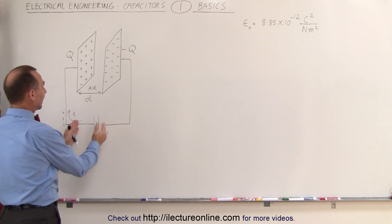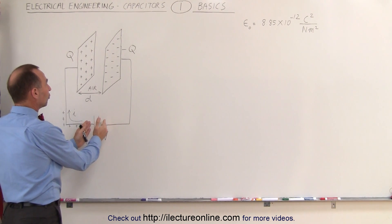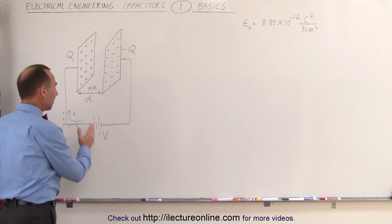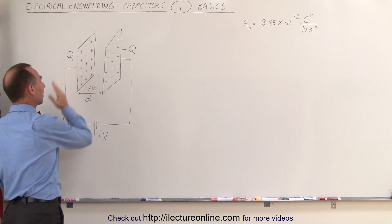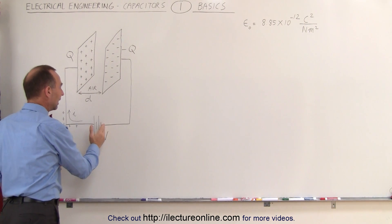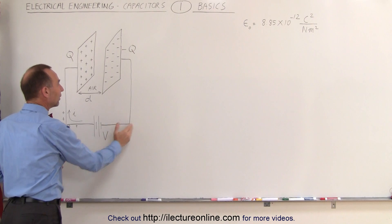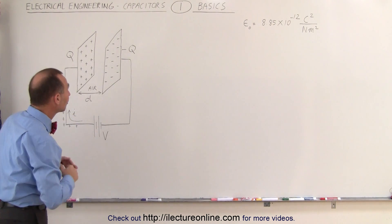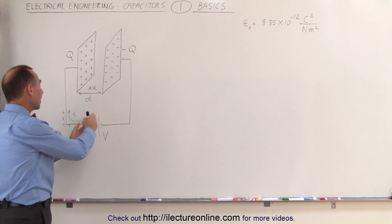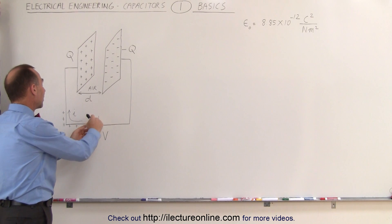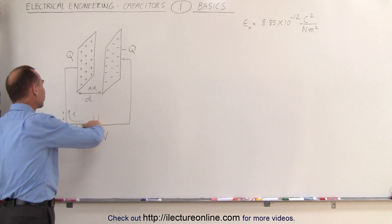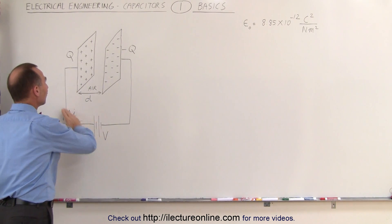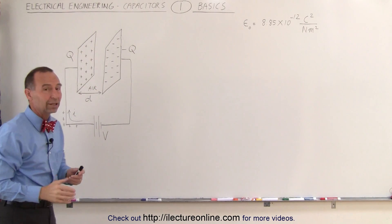We then connect a battery or a voltage source to either side of the plates. We have the positive side of the battery on one side of the plate, and the negative side of the battery connected to the other plate. The potential across the battery drives current to one side of the capacitor, filling that capacitor with charge.